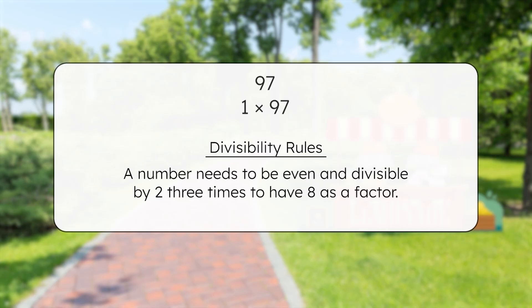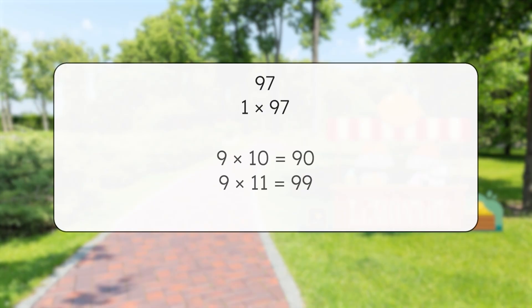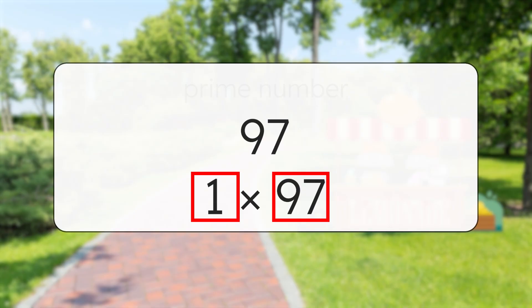Just like with 2, a number needs to be even to have 8 as a factor, and since 97 is odd, 8 is not a factor. As for 9, 9 times 10 equals 90, and 9 times 11 equals 99, so 9 isn't a factor either. If you've checked for factors up through 10, you'll have found all of the factors for any number up to 100, and you can tell whether it's prime or composite. Since 97 still only has 1 and 97 as factors, it's prime.